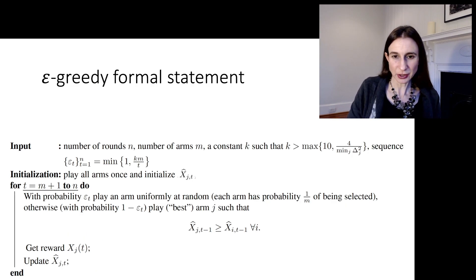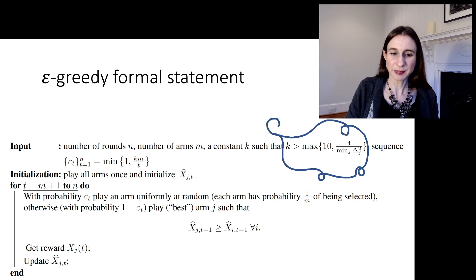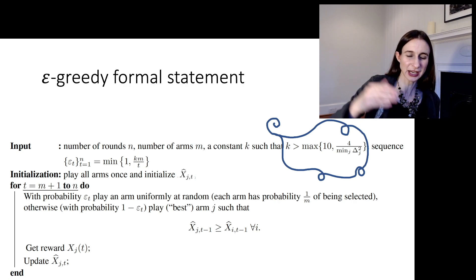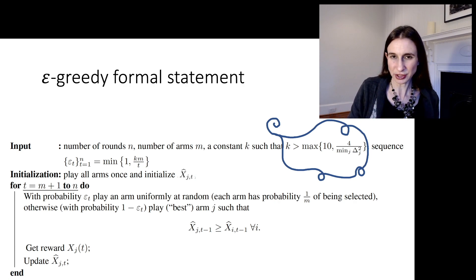I just want to go back to the formal statement of epsilon greedy and remind you of something. We chose this parameter of the algorithm k so that it was big, so that it's bigger than both 10 and 4 over the minimum over j of δ_j squared, and that's going to come in super handy in the theory. The bigger k is, the more exploration we do because k is a scaling factor on epsilon, which controls exploration.